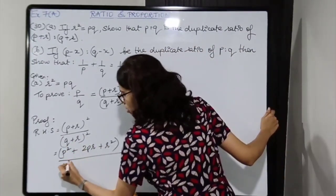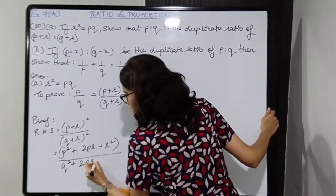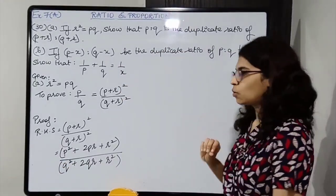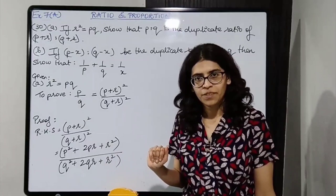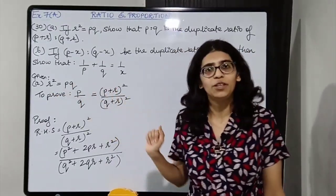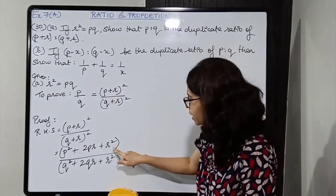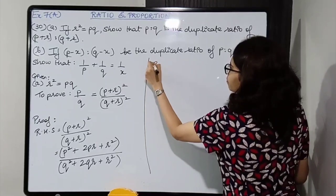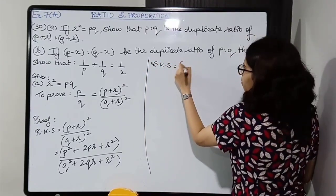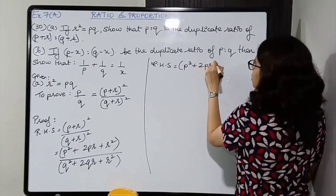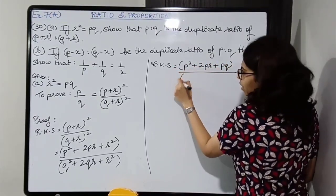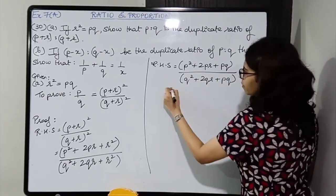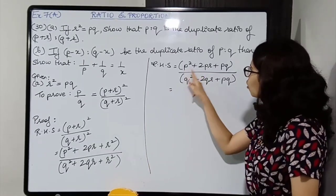So we have P into P plus 2R plus Q upon Q into P plus 2R plus Q. The brackets are identical so we can cancel out the entire bracket — students, you cannot cancel individual terms when there is a plus sign in between. Cancelling the entire bracket, we are left with P upon Q.